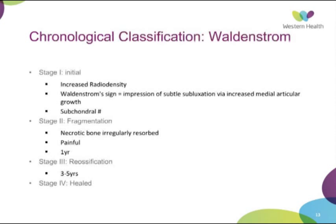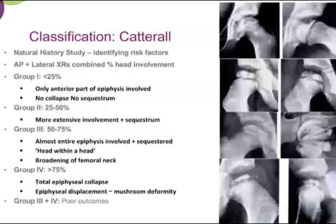Waldenstrom's classification has four stages: the initial phase with increased radio density, the Waldenstrom sign of subtle subluxation via medial articular growth, and subchondral fractures. Stage two is fragmentation — this is where patients typically present, with the painful stage. Stage three is re-ossification. Stage four is healed. It's useful for predicting rough timelines but doesn't give a proper prognostic indicator as to what deformity will result.